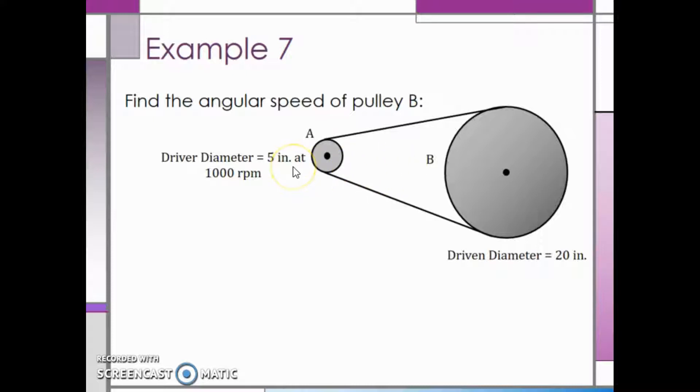Pulley A has a diameter of 5 inches and it is rotating at 1000 revolutions per minute. The diameter of pulley B is 20 inches. We can keep the diameters in inches since they are both in inches and dividing inches by inches cancels out those units.